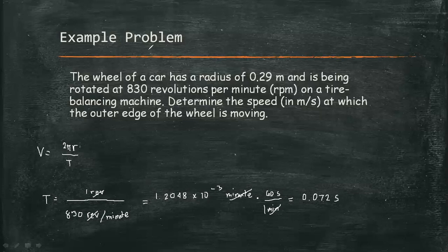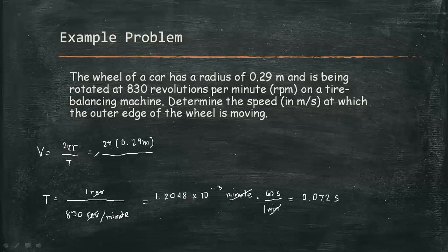So for this wheel of a car, it takes 0.072 seconds to make one revolution. Now we can solve for velocity by substituting the radius and the period: 2π times 0.29 meter divided by 0.072 seconds equals 25.21 meters per second.